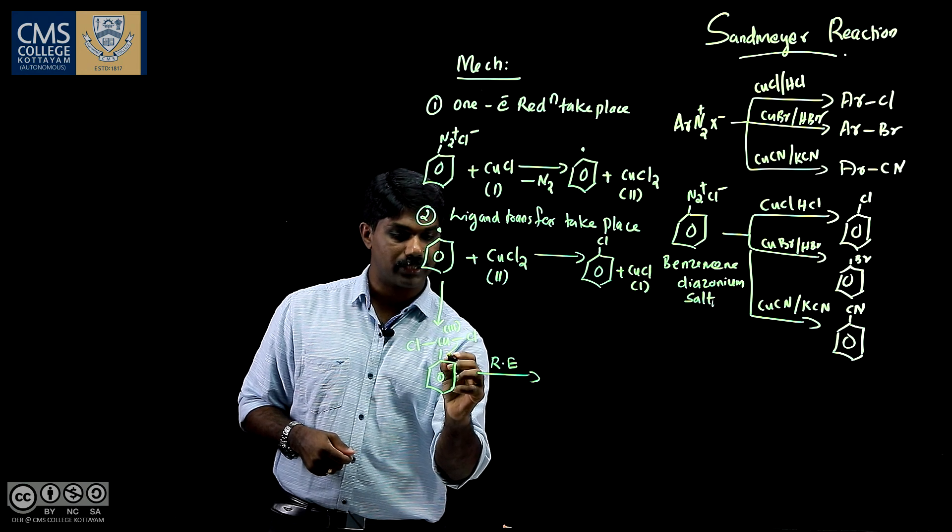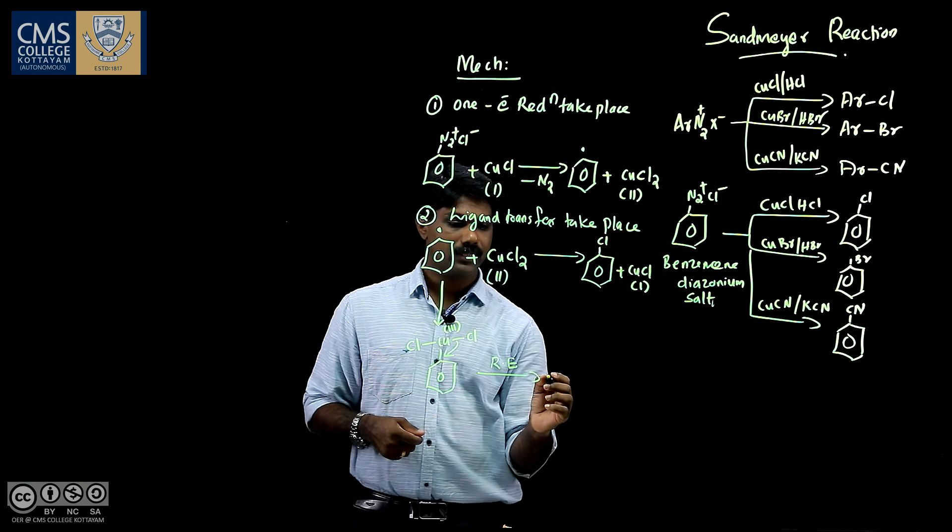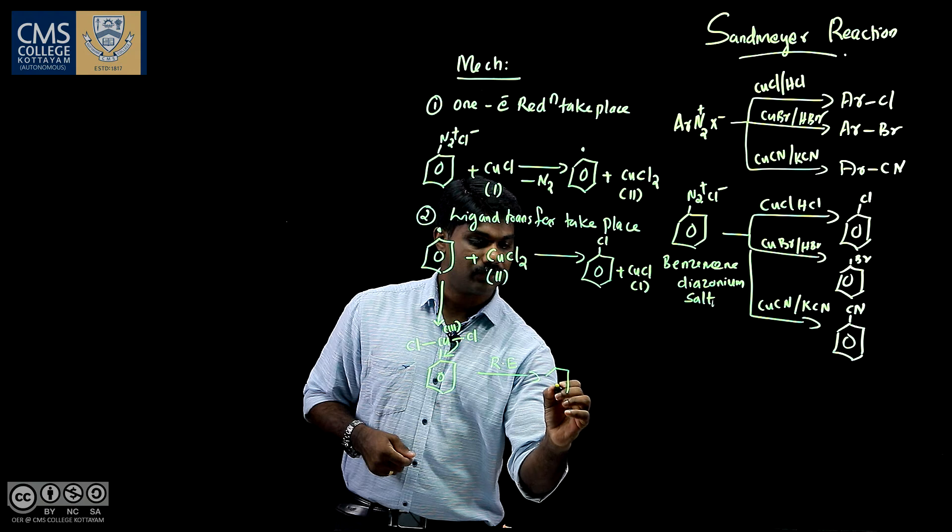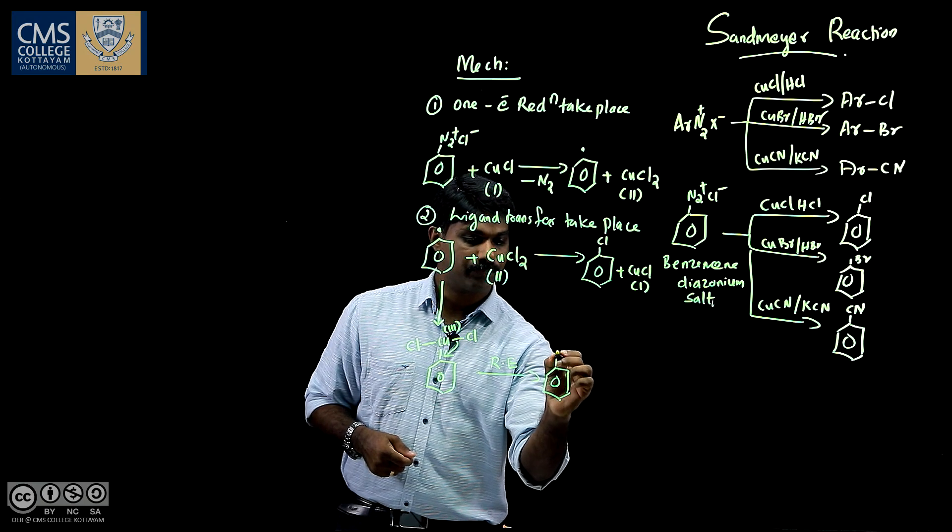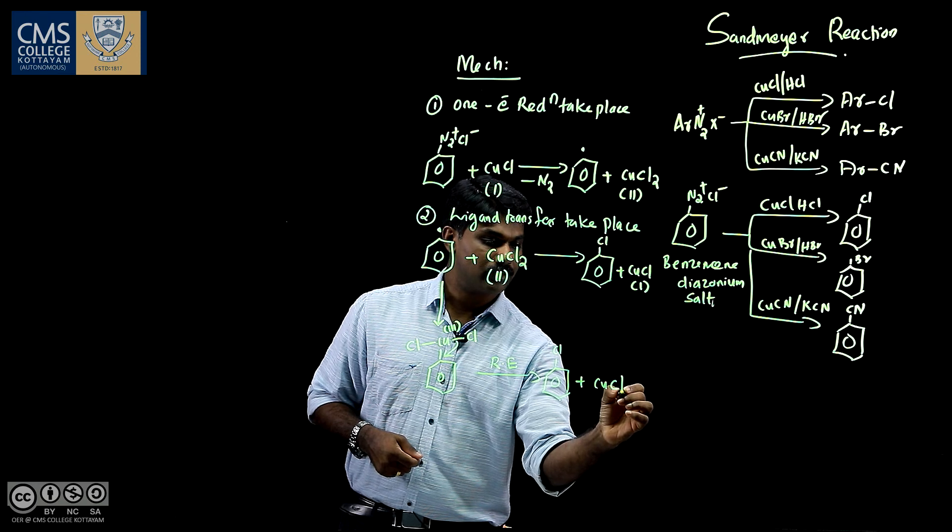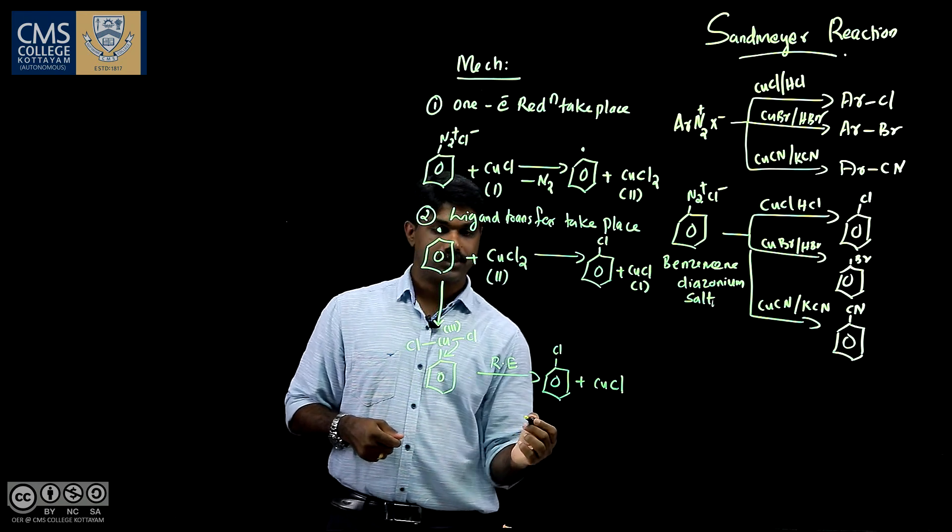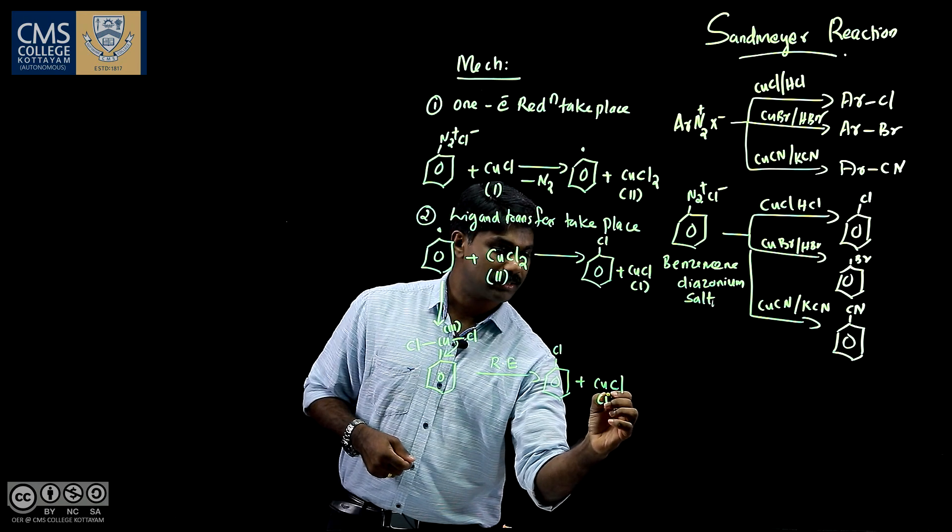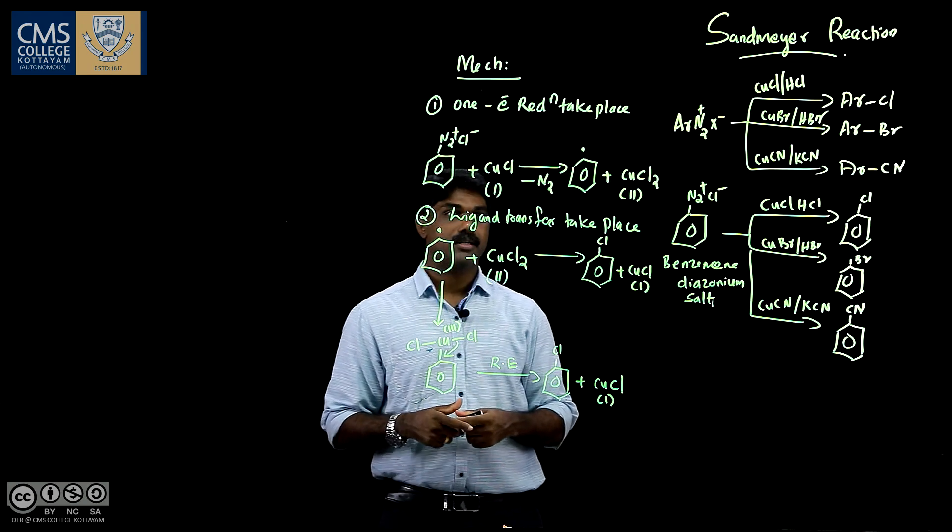Reductive elimination. So this gets bonded here. We get the same product. Here you have CuCl. So here again, the oxidation state is +1.